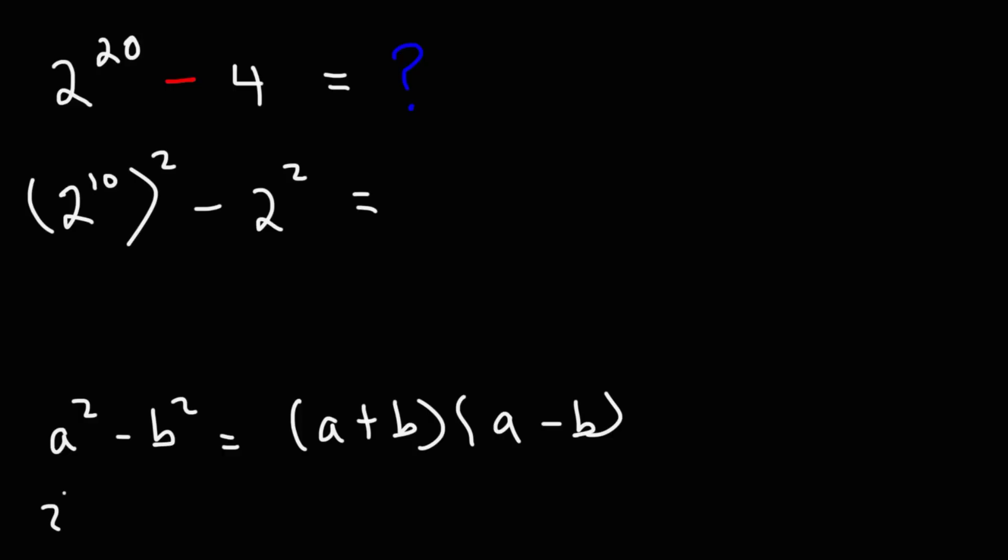In this example, a is 2 to the 10 and b is 2. So we have a plus b, that's 2 to the 10 plus 2, and then a minus b: 2 to the 10 minus 2.